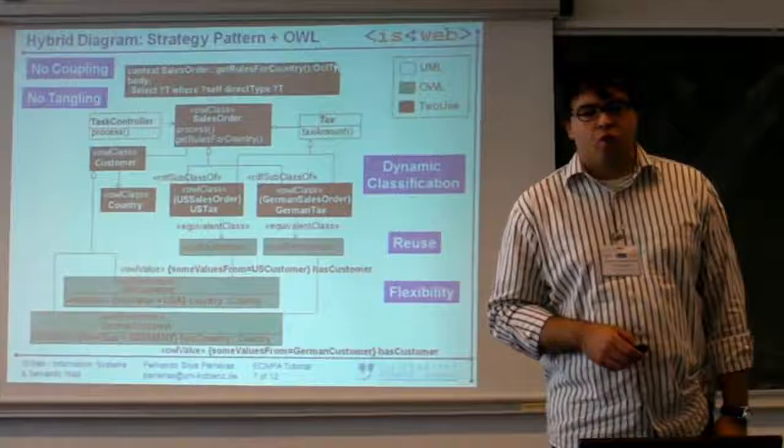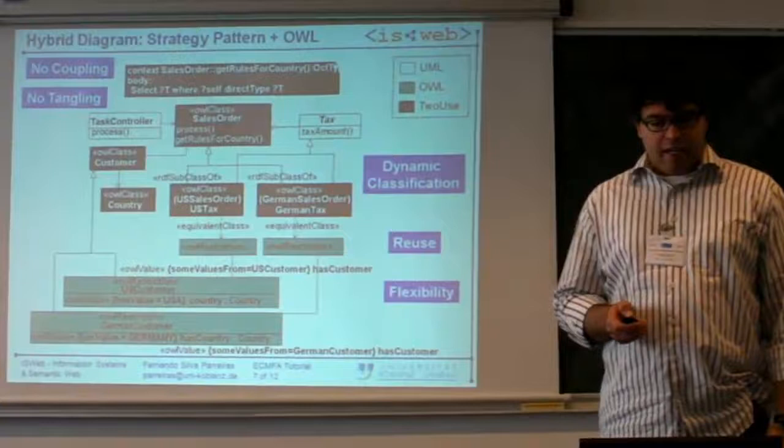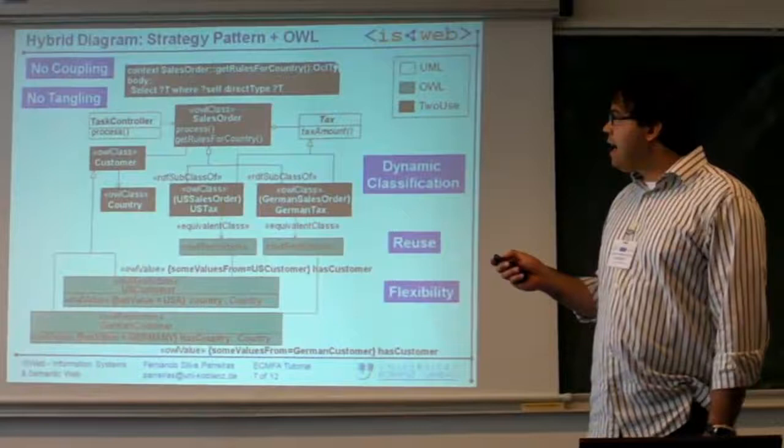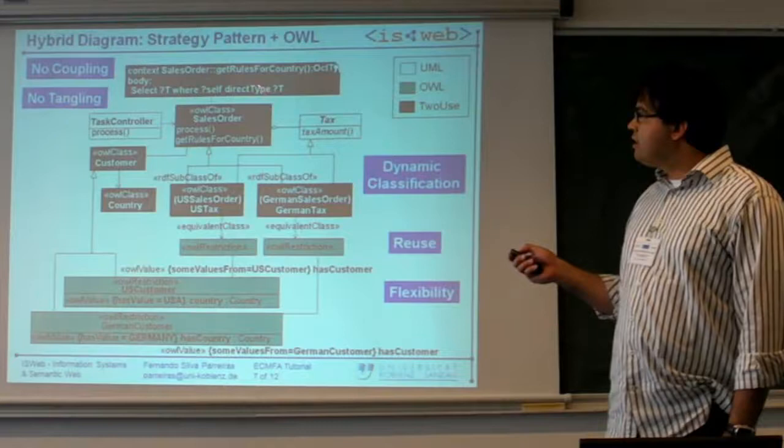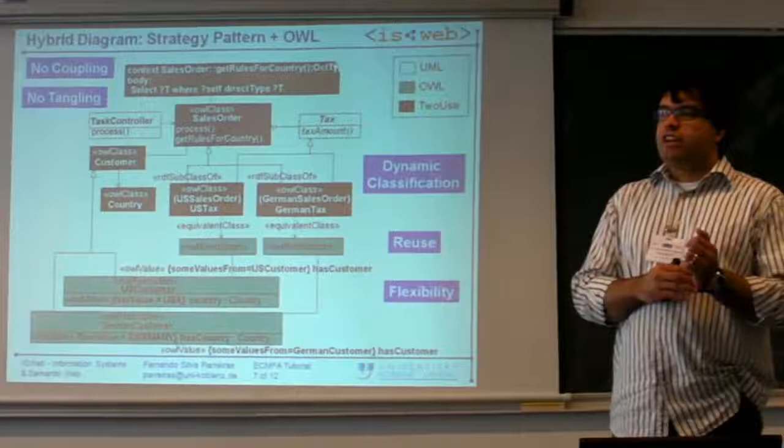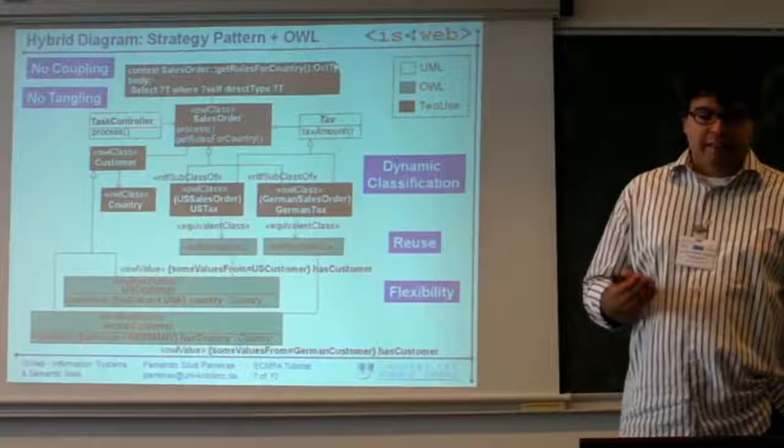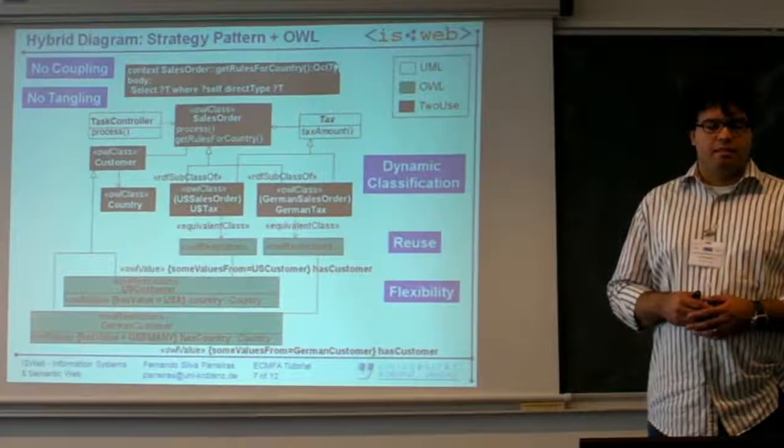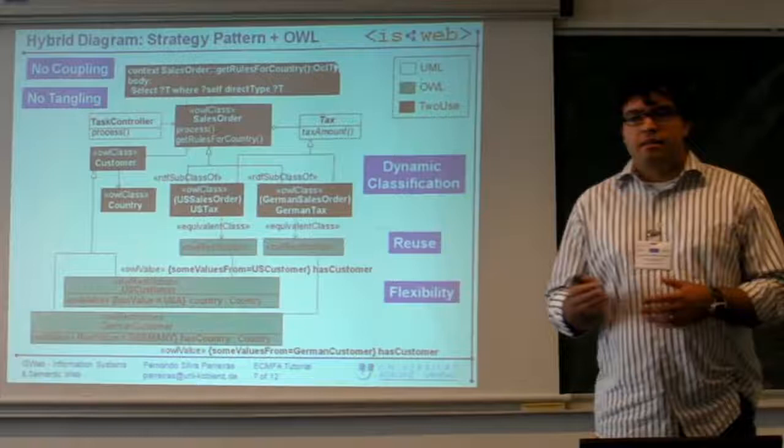That's what we are going to do with SPARQL AS. You select here the type T where self is the direct type of your context variable, which is called self. It is the direct instance of this type T. I mean I want to have all the Ts, all the types that are direct types of self. This is basically the query I showed you with the demo. I'm going to show you later on.